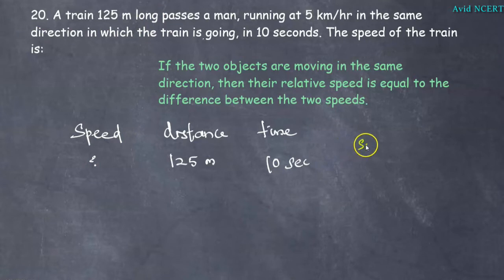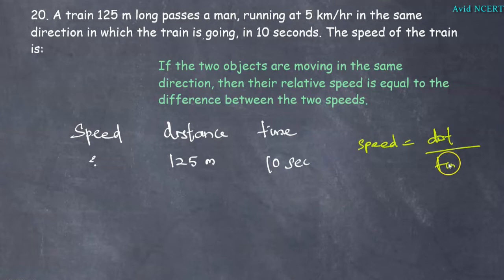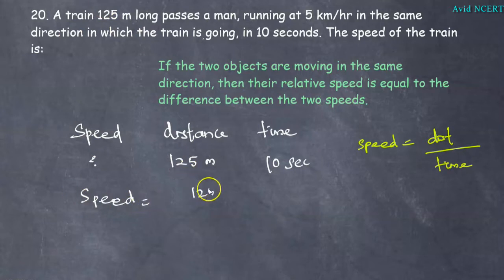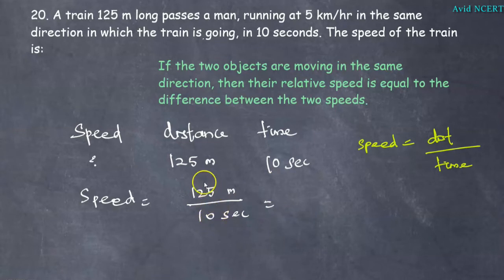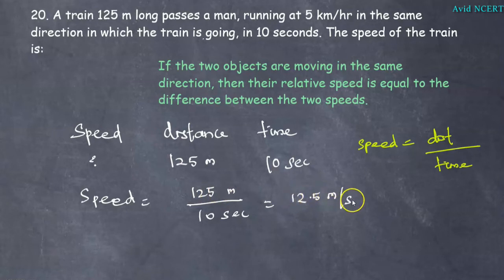The formula we know is speed equals distance divided by time. Therefore, speed equals 125 meters divided by 10 seconds. This is already in the form of meters per second, so we need not convert the units. Simplifying, that equals 12.5 meters per second.